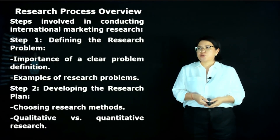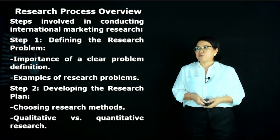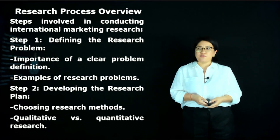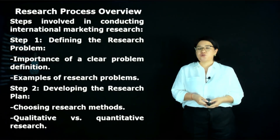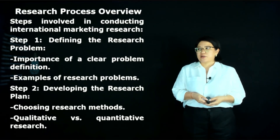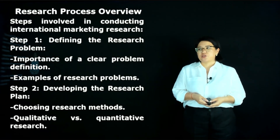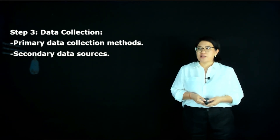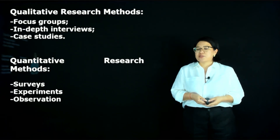The research process overview — steps involved in conducting international marketing research: the first step is defining the research problem, including the importance of a clear problem definition and examples of research problems. Step two is developing the research plan, which involves choosing the research method.